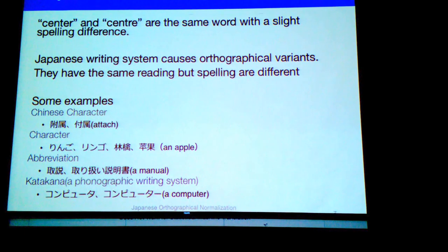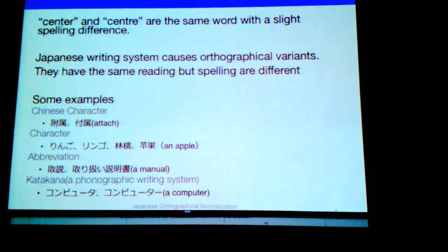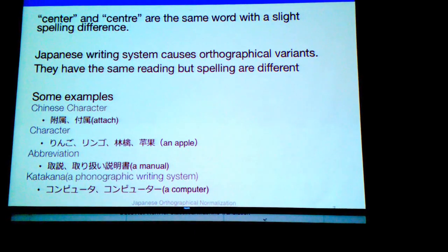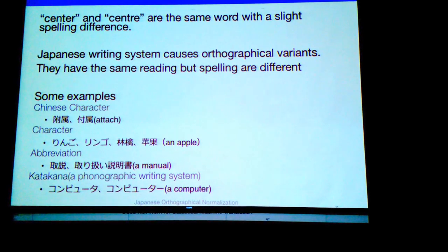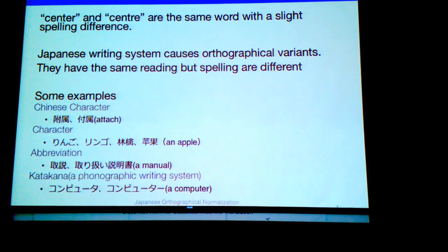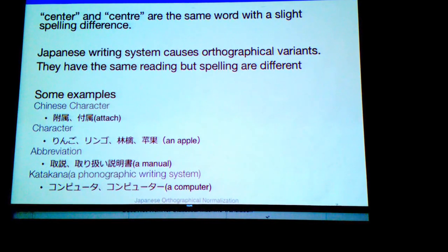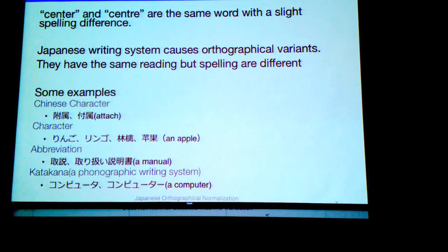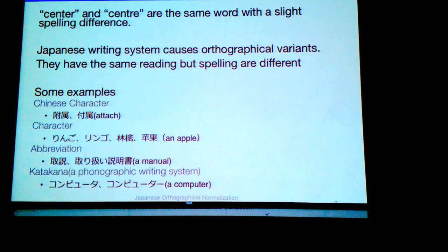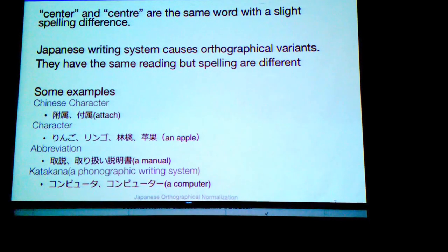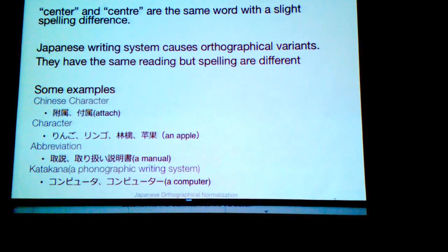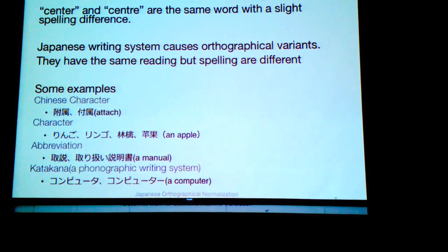The third example is abbreviations. In Japanese, there are many abbreviations. We normalize them. For example, this word means 'manual,' and we normalize abbreviations if the words have no ambiguity. The last example is katakana. Katakana is a phonographic writing system in Japanese. This word means 'computer,' and the difference is in the final character — the left one has no character to represent a continuous sound, while the right one has a continuation character.